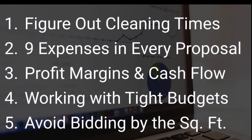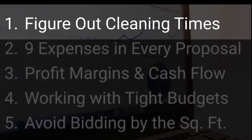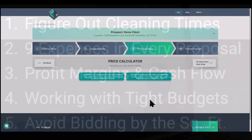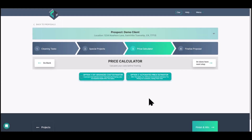Here we are logged into Clean Proposals with a sample prospect. We're going to start with number one: figuring out your clean times, because that's one of the more difficult aspects of cleaning — how long is it going to take to clean? Once you get that, it unlocks everything else you need for your bidding process. We're going to head to the Automator Price Estimator.